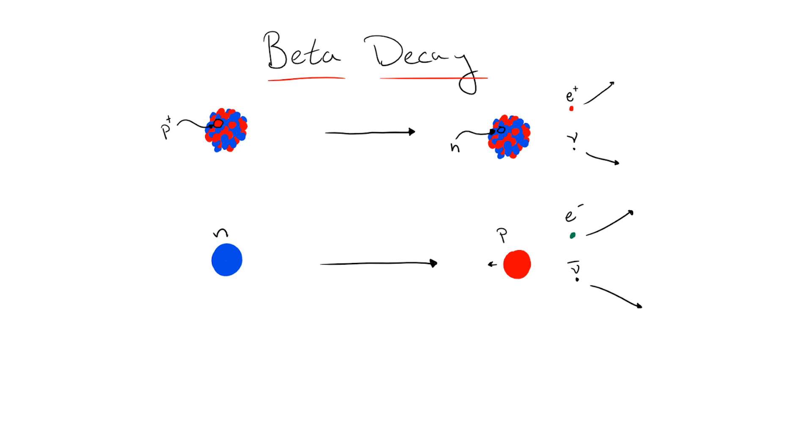The proton in this scenario must be bound in a nucleus since the neutron is heavier than the proton, so a free proton decaying to a neutron would not conserve energy. So for a proton to decay inside a nucleus, the nucleus as a whole must end up lighter in the final state than in the initial.